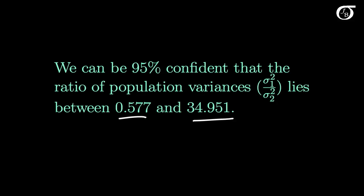One thing we might note is that the value 1 is contained in our confidence interval. Why is that meaningful? Well, this is a confidence interval for sigma 1 squared over sigma 2 squared, and since 1 is in our interval, we're thinking of 1 as a plausible value of our ratio of variances. And if 1 is a plausible value, then it's plausible that these variances are equal. But if we're interested in testing for equality of variances, we can do that more formally with a hypothesis test, and I do have another video for that.